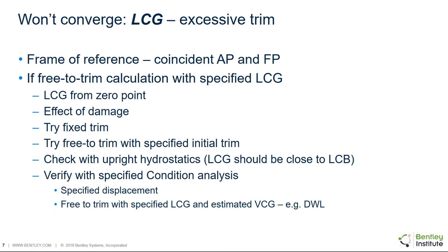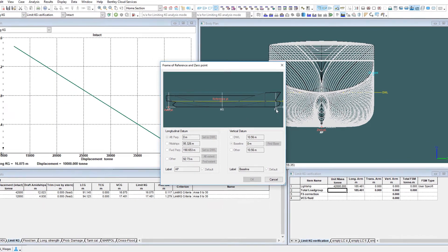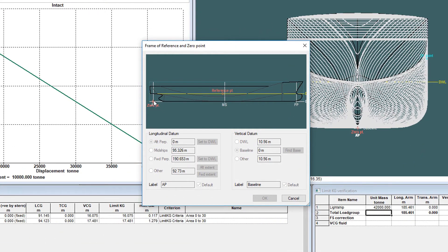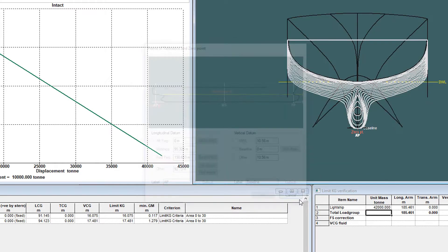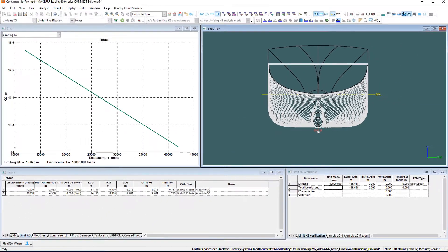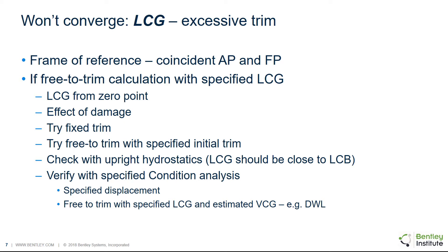For a free to trim calculation, you should also check the LCG. If incorrect, this can cause excessive trim preventing the analysis from solving. Ensure that the aft and fore perpendiculars are correctly specified in the frame of reference dialog. When specifying the LCG, enter the value measured from the zero point. Remember to consider the effect of any damage which may change the location of the center of buoyancy.